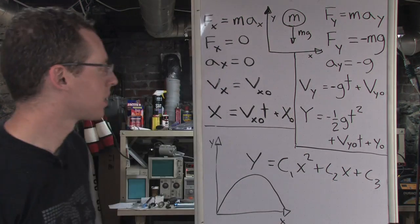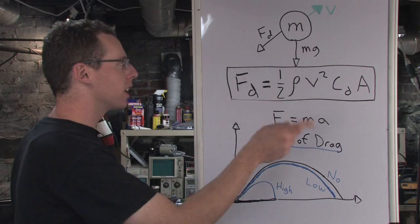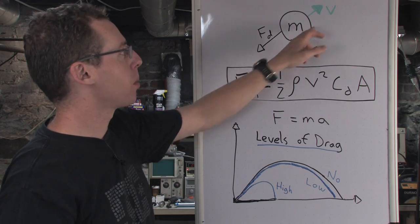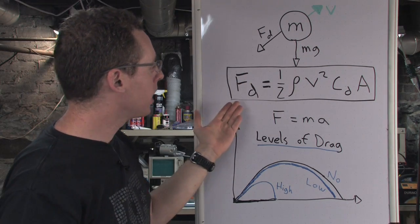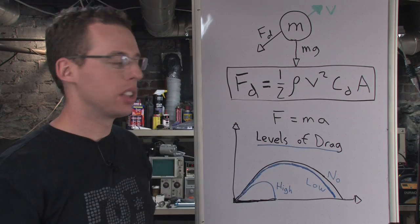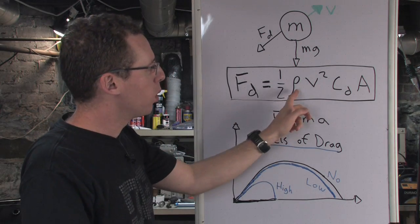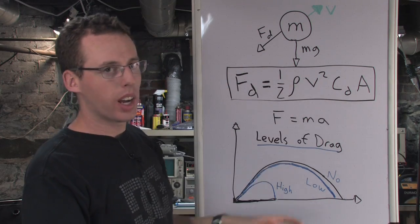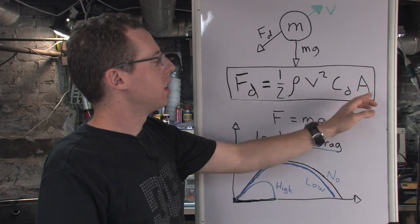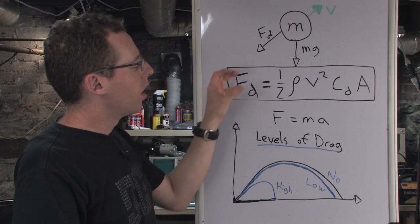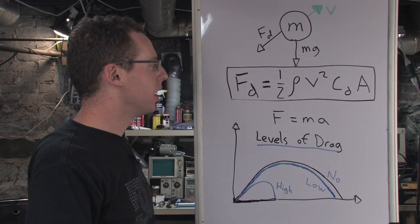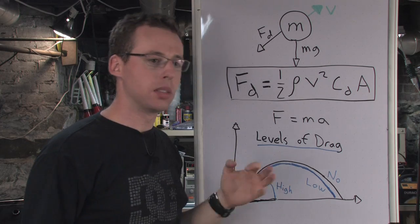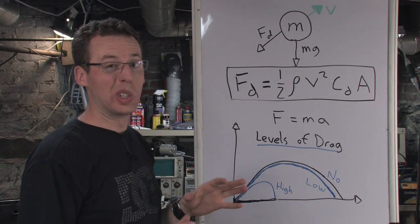So what happens when you add in drag? Drag is pretty interesting. Here's our free body diagram of the object flying through the air with drag. The force of drag acts in the opposite direction as the velocity, and the force of drag is equal to this equation, or this is how we approximate it. One half rho, this is the density of the fluid, times v squared, the velocity of the object through the fluid, times the coefficient of drag, which is found experimentally, times the cross-sectional area that's perpendicular to the velocity that you're traveling in. For a sphere, the coefficient of drag is around 0.5, and that's the same as for a lot of objects. It always tends to be around 0.5, unless it's a really odd object.